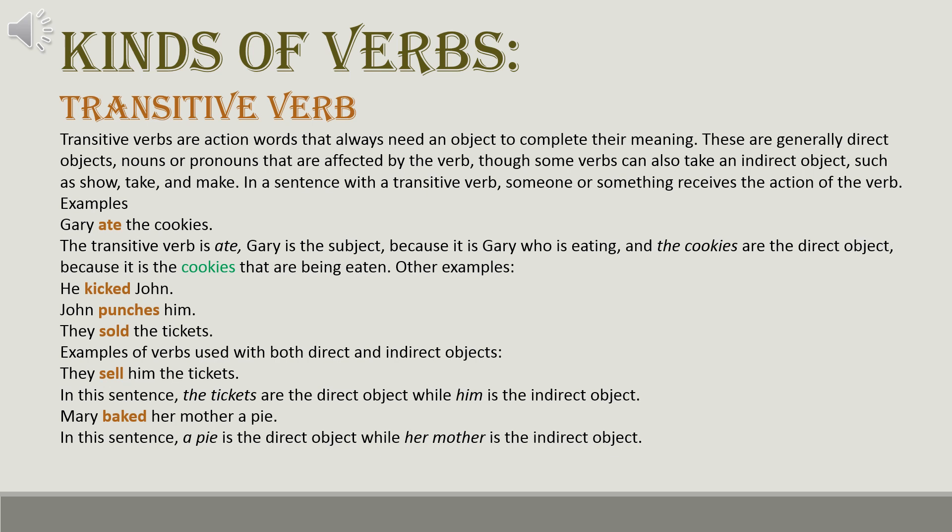Transitive verbs are action words that always need an object to complete their meaning. These are generally direct objects — nouns or pronouns that are affected by the verb — though some verbs can also take an indirect object, such as show, take, and make. In a sentence with a transitive verb, someone or something receives the action of the verb.